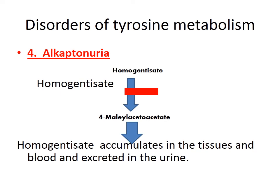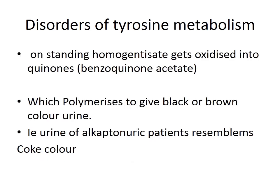Fourth is alkaptonuria, which occurs due to blockage at the fourth stage. The enzyme homogentisate oxidase is deficient, so homogentisate cannot be converted to maleylacetoacetate. Homogentisate accumulates in tissues and blood and is excreted in urine — hence alkaptonuria. On standing, homogentisate is oxidized into benzoquinone acetate, which polymerizes to give black or brown colored urine. The urine of an alkaptonuric patient turns a coke-like color on standing.